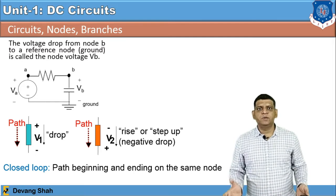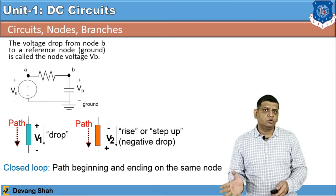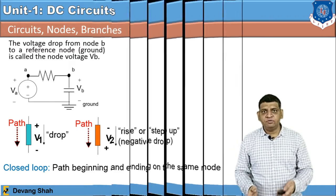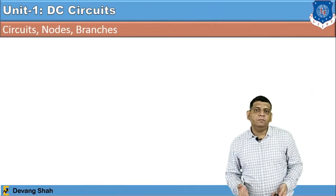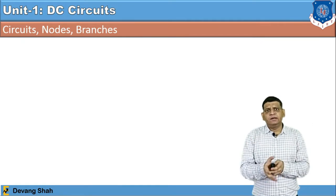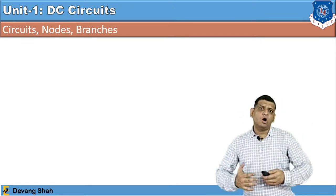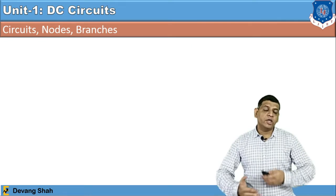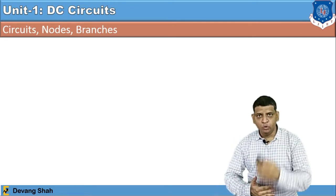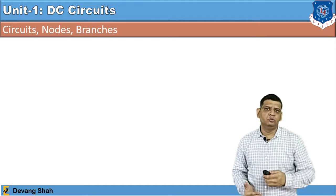There are two laws based on Kirchhoff's theory: one is based on voltage and another is based on current. Let us first start to learn Kirchhoff's current law. Before that, let us do some important exercises — how can you identify branches, how can you identify nodes, and how can you identify loops.